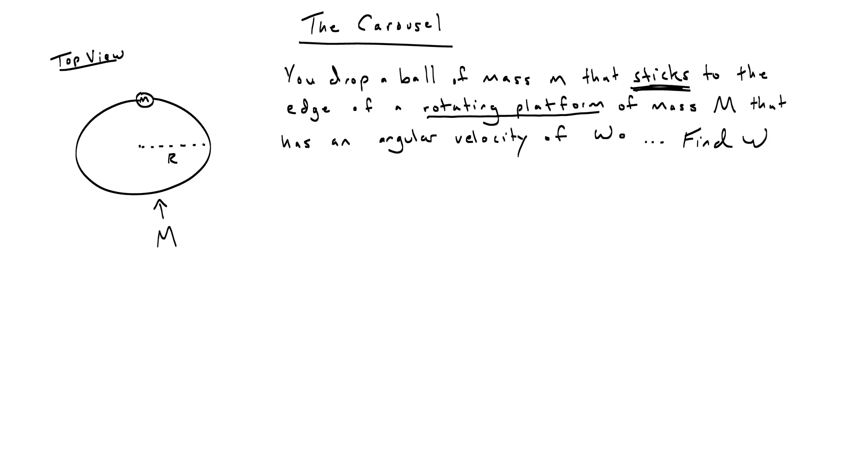If you want, pause the video and see if you can use LOL to solve for the angular velocity. Okay, so the first thing that I would do is I would consider the angular momentum that's in the beginning. Because you're dropping the ball, you won't have any angular momentum for the ball in the beginning. But the disk or the platform is rotating, so you would say that you have some angular momentum for the rotating disk in the beginning. Now to help us keep track of things, I'm going to call the rotating disk thing one, and the dropped ball thing two. It's going to help us keep track of things.